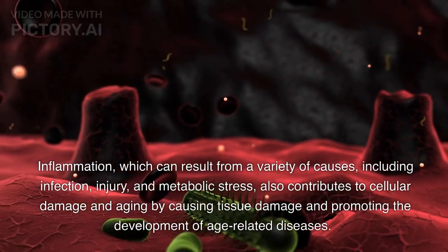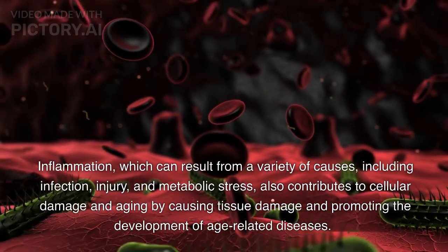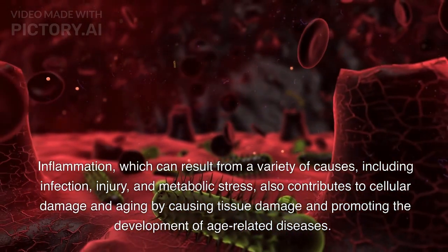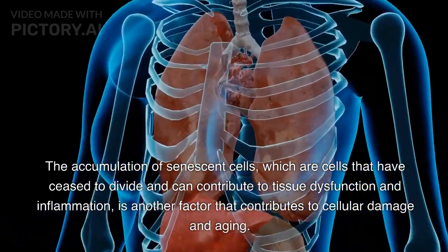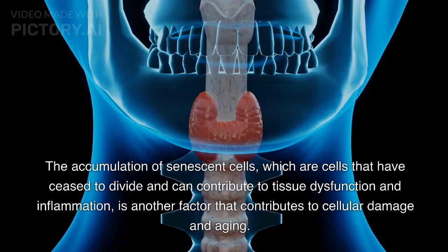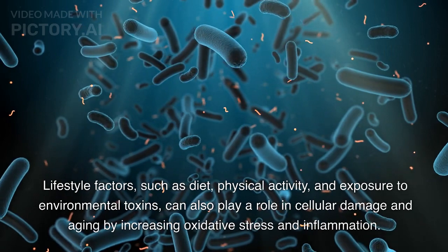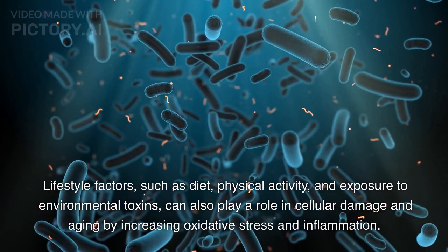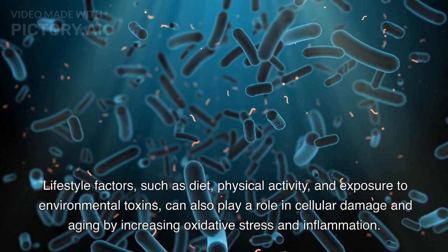Inflammation, which can result from a variety of causes including infection, injury, and metabolic stress, also contributes to cellular damage and aging by causing tissue damage and promoting the development of age-related diseases. The accumulation of senescent cells, which are cells that have ceased to divide and can contribute to tissue dysfunction and inflammation, is another factor that contributes to cellular damage and aging. Lifestyle factors such as diet, physical activity, and exposure to environmental toxins can also play a role in cellular damage and aging by increasing oxidative stress and inflammation.